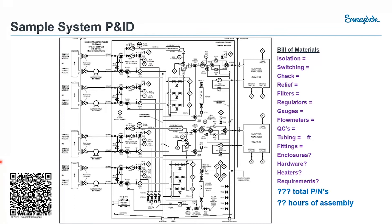If you just talk about the components alone, you would have isolation valves, switching valves, check valves, and relief valves — and a check valve may have three different part numbers in the system. When you build a system like this, a contractor will charge you man hours to put it together. This is how we quantify the value: in this sample system, you have 135 part numbers and 54 hours of assembly.